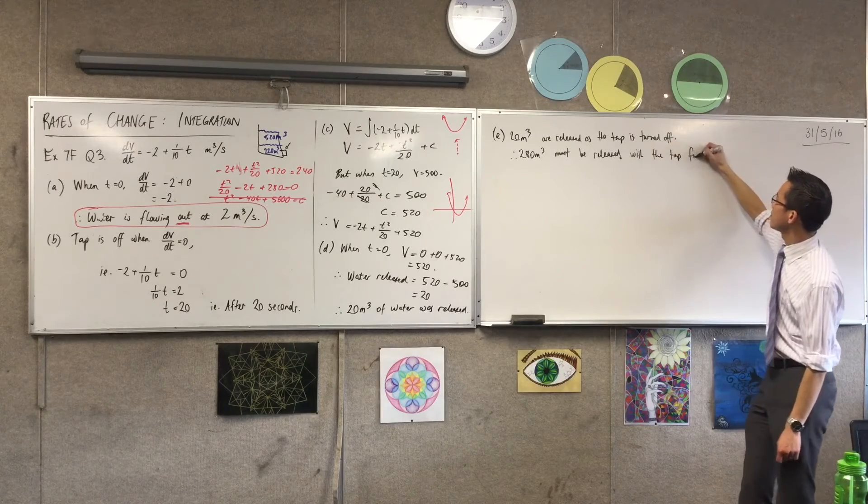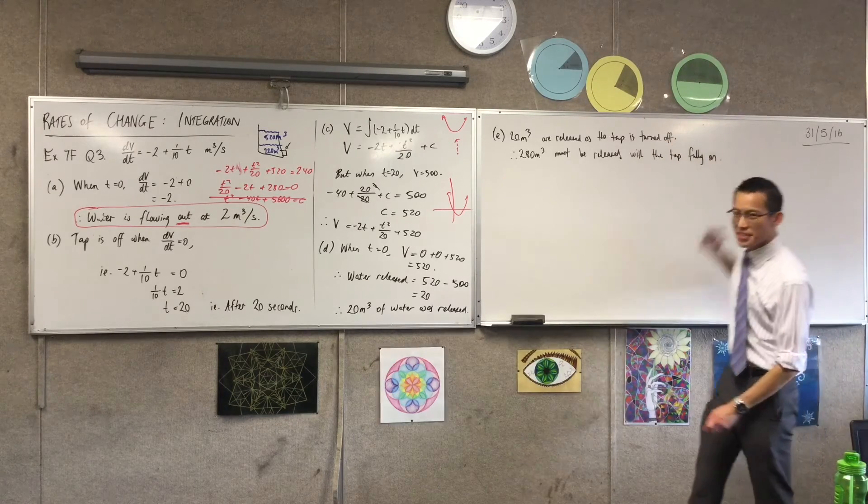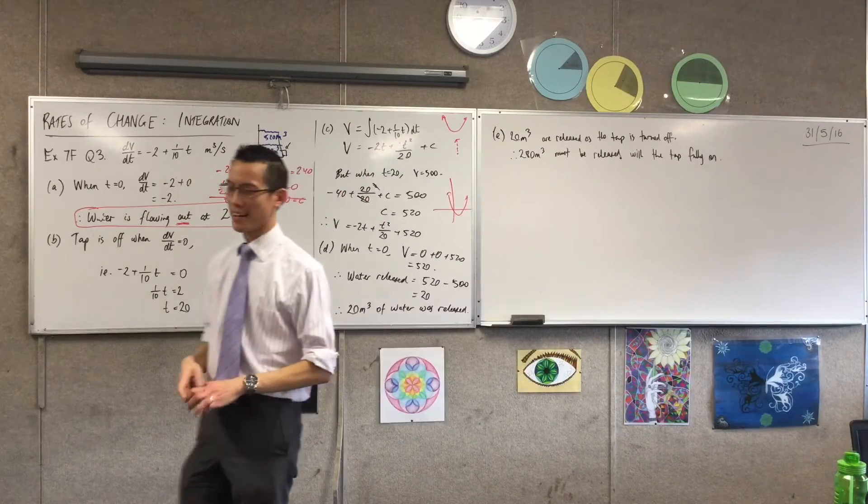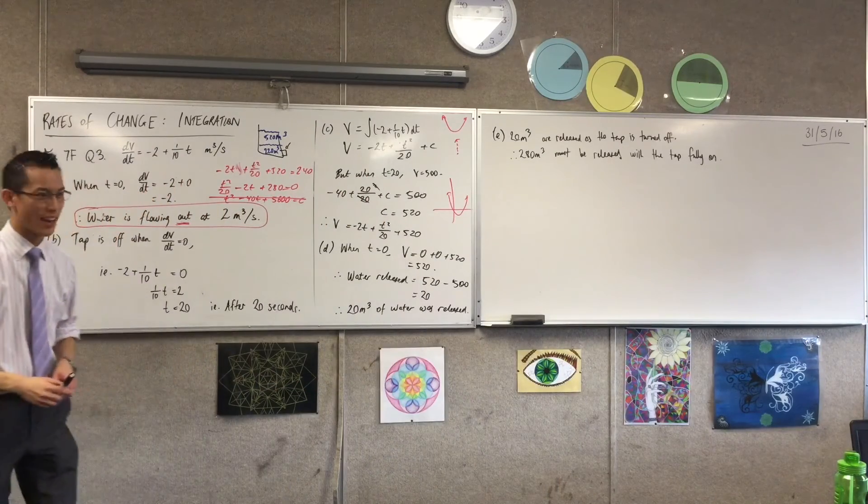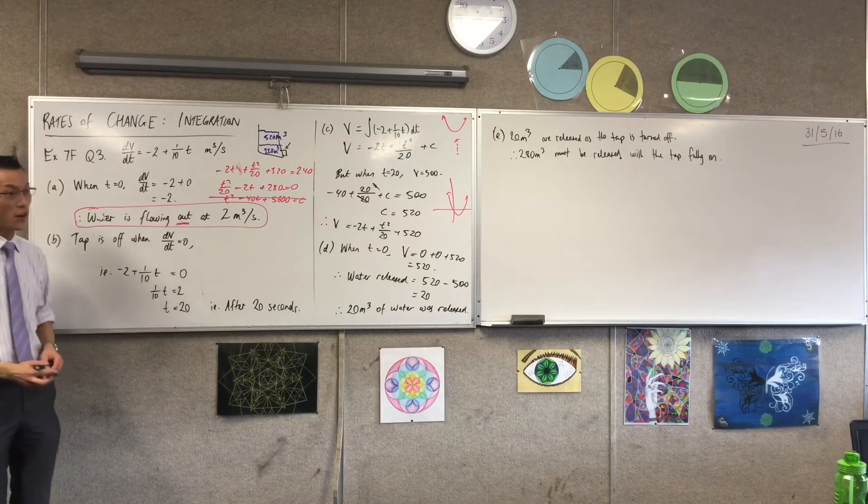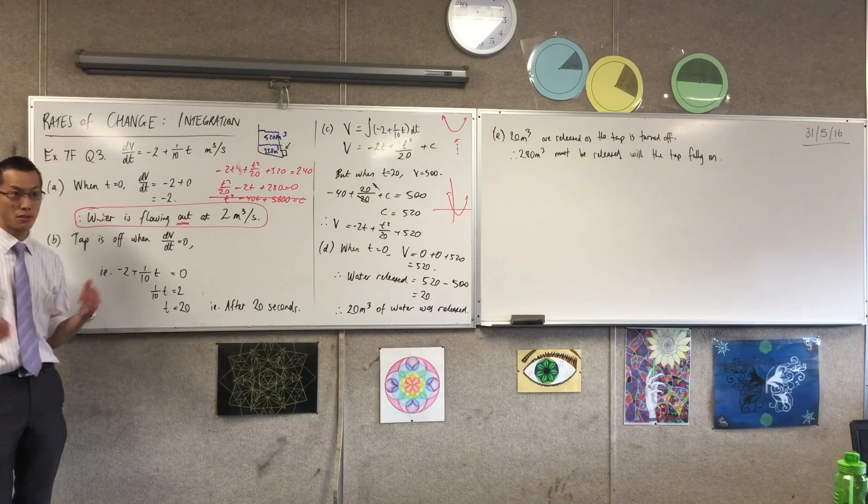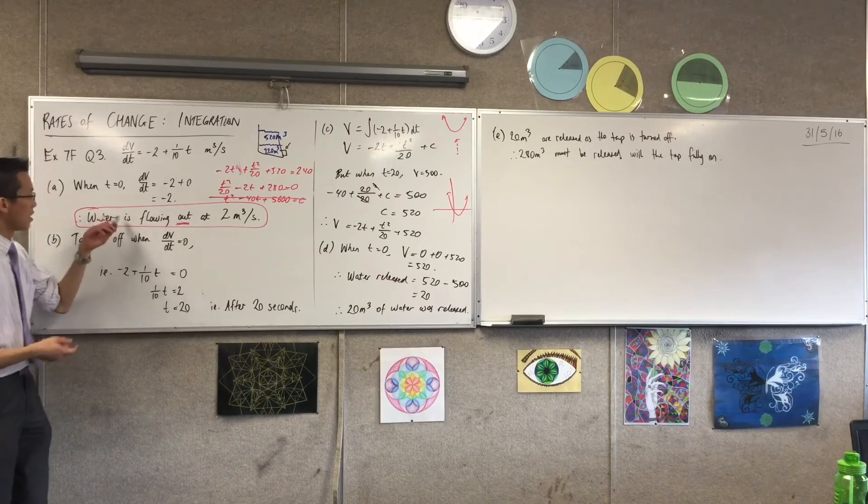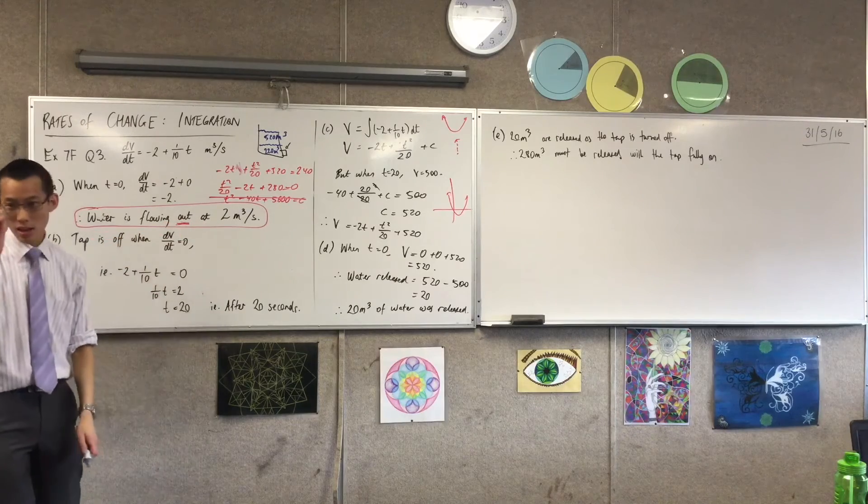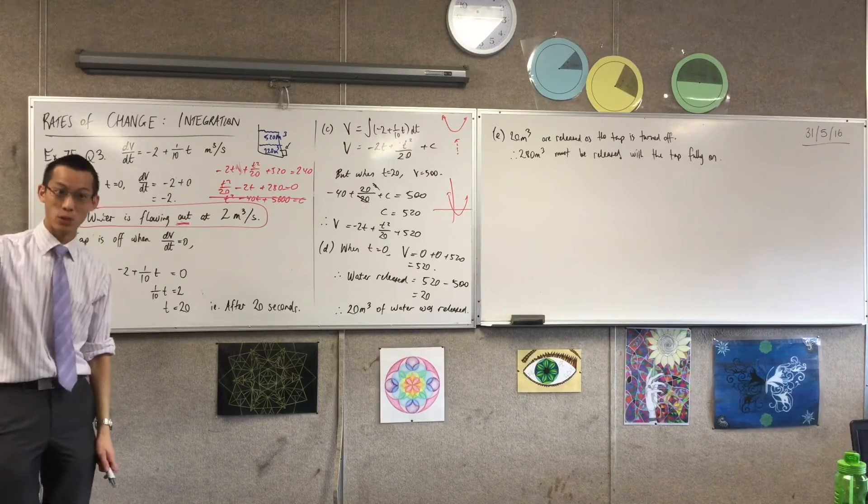But hold on a second. When the tap is fully on, I know exactly how much water is leaving the tank every second. It was the first question I answered, right? Part A, water's flowing out at 2 cubic meters per second at time zero when the tap is fully on.